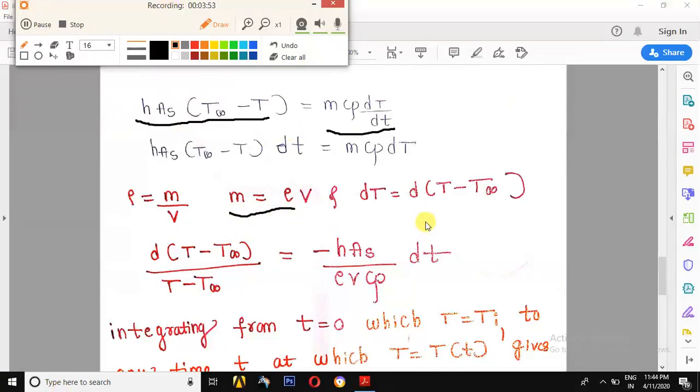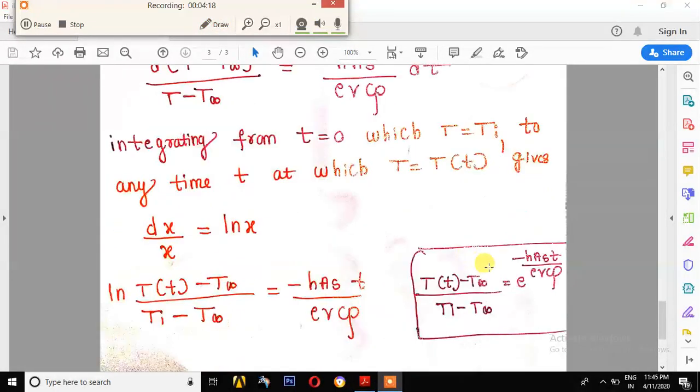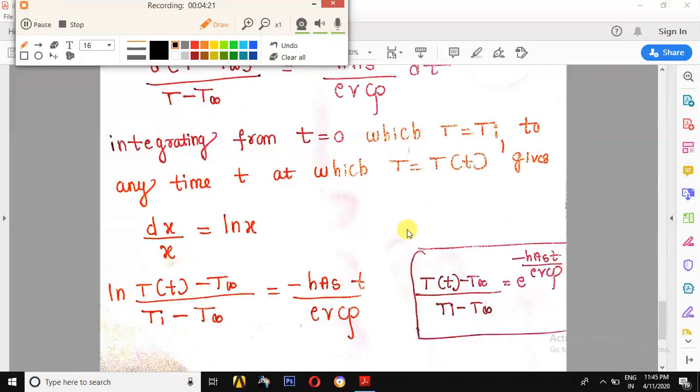Substituting m value and dT value and rearranging the above equation gives this expression. By integrating this expression from the limits initial temperature to the final temperature, we use this expression.